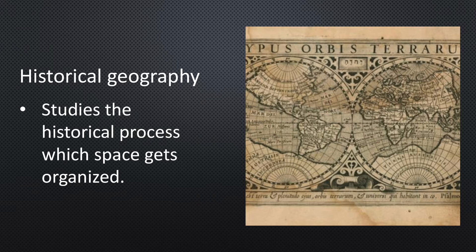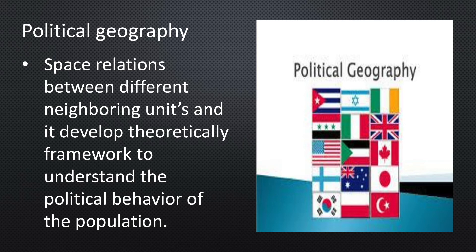Historical geography: this studies the historical process through which space gets organized. Every region has undergone some historical experiences before attaining the present geographical features. The geographical features also experience temporal changes and these form the concerns of historical geography. Political geography: looks at the space from the angle of political events and studies boundaries, space relationships between neighboring units, delimitation of constituencies, election scenarios, and develops a theoretical framework to understand the behavior of the population.